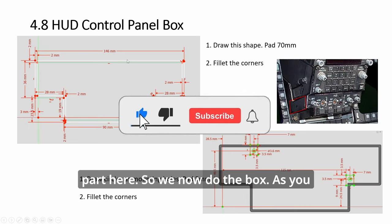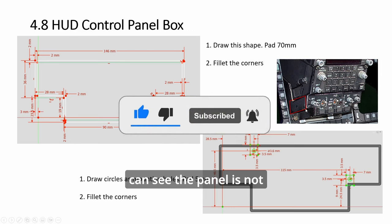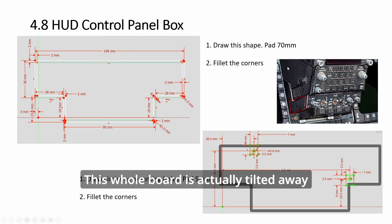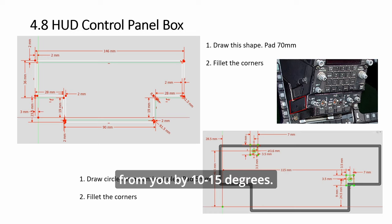So we now do the box. As you can see, the panel is not sitting with the console surface. It's protruding out quite a bit. So will the UFC. And this whole board is actually tilted away from you, like 10, 15 degrees, while this one tilt towards you. Okay, it's kind of tricky. So you want to build a box.